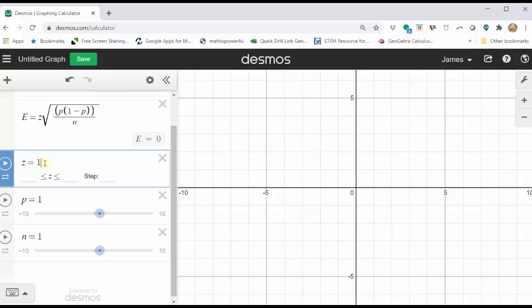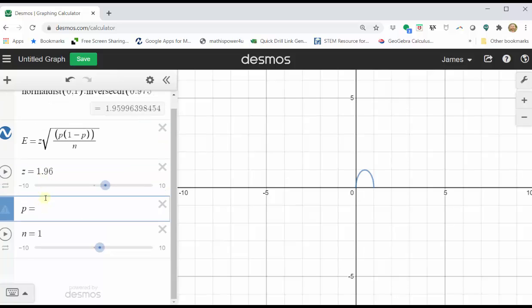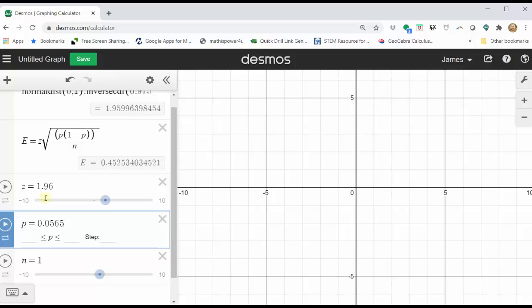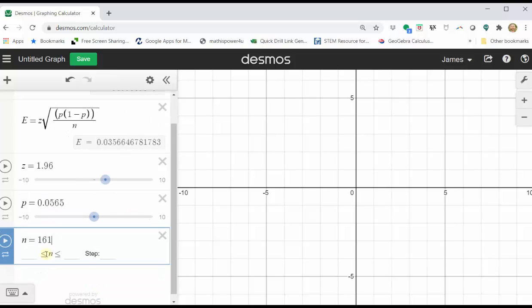The z-score is 1.96. The sample proportion is 0.0565, and n is 1,610. Notice how the error to four decimal places is 0.0113.